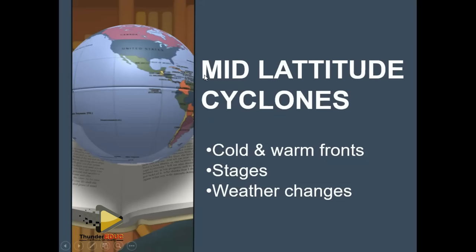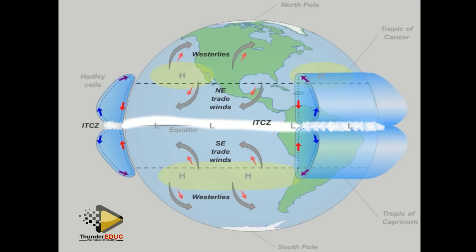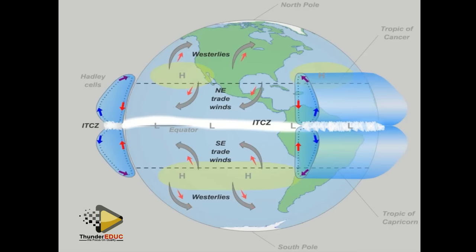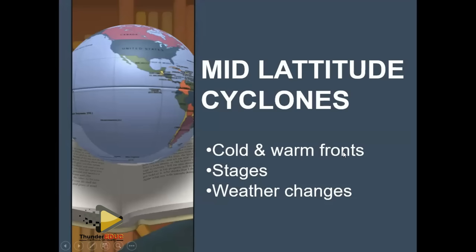It's called a mid-latitude cyclone because it is found within the mid of the latitudes, and the cyclone is basically a low pressure system. It forms at the subpolar region at around 60°. It forms because we have the westerlies on one side and the polar easterlies on the other. The westerlies are warm, coming from the subtropics; the easterlies are cold, coming from the poles.